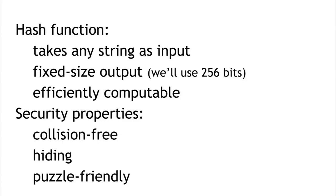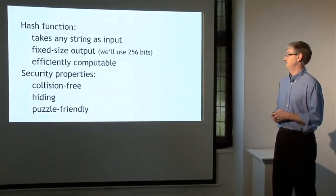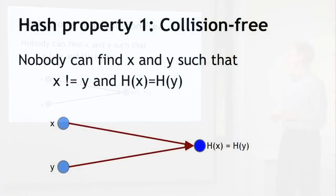For each of these properties, I'll talk about what the property is, what it means, and why it's useful to have a function with that property. First: collision-free. The first property we need from a cryptographic hash function is that it's collision-free — meaning it's impossible for anyone to find values x and y such that x and y are different, and yet the hash of x equals the hash of y. Nobody can find an x and y that are separate and yet hash to the same value.